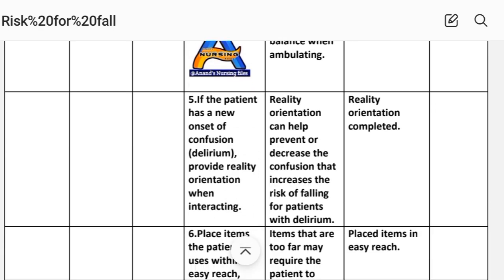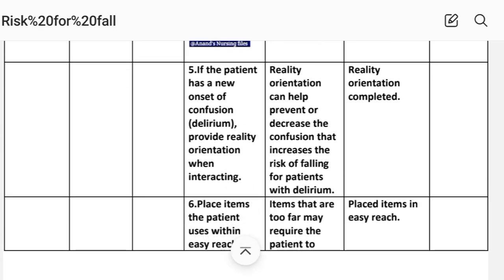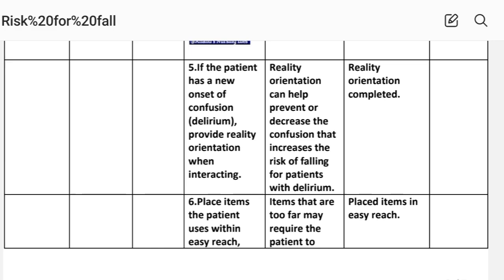Intervention 5: If the patient has a new onset of confusion or delirium, provide reality orientation when interacting. Rationale: reality orientation can help prevent or decrease the confusion that increases the risk of falling for patients with delirium. Implementation: reality orientation completed.